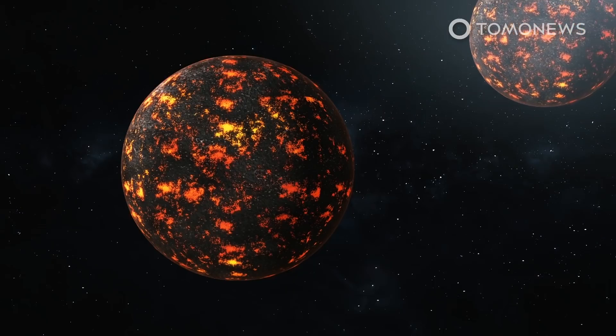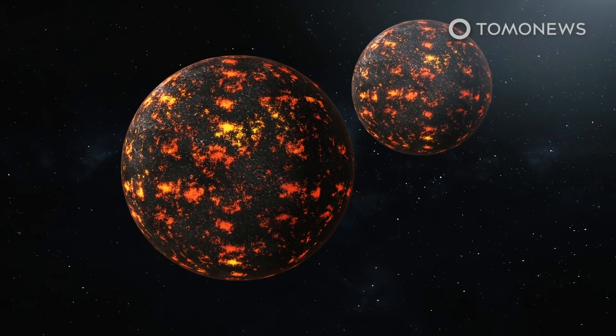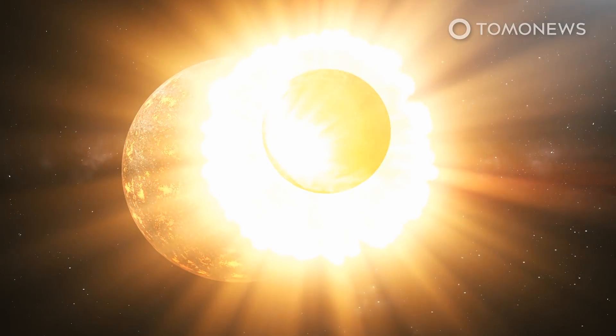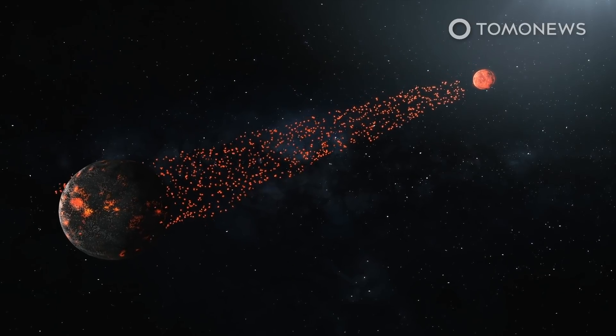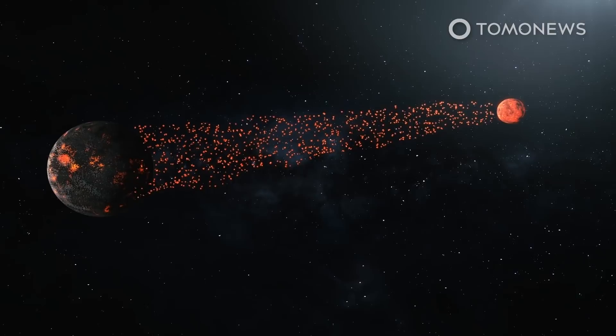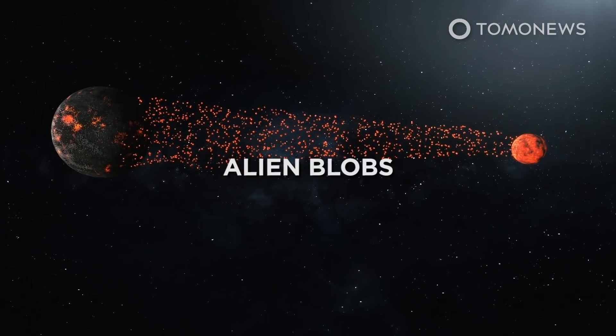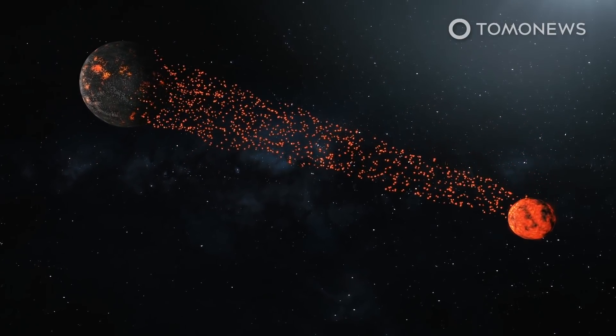Along similar lines, many scientists believe that the Moon formed when a Mars-sized planet called Theia struck Earth around 4.5 billion years ago. And in March, a team of scientists theorized that Theia's remains are what formed two mysterious, continent-sized blobs of rock buried deep in Earth's mantle.